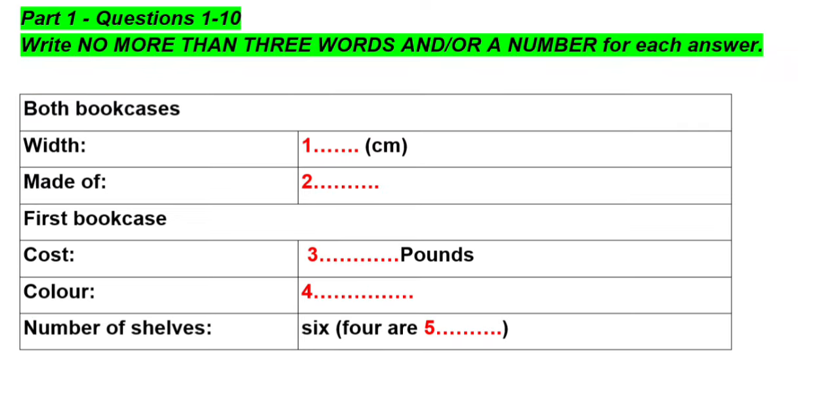Test 1, Section 1. You will hear a man phoning a woman about an advertisement he has seen in the paper for some furniture. First, you have some time to look at questions 1 to 5 on page 9. Now we shall begin. You should answer the questions as you listen because you will not hear the recording a second time. Listen carefully and answer questions 1 to 5.